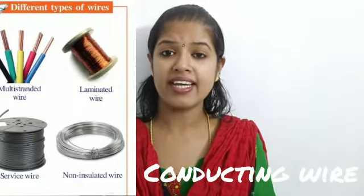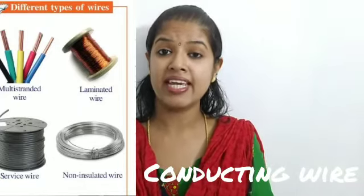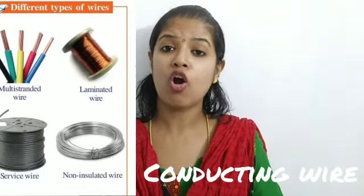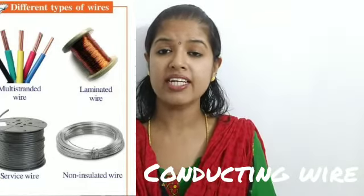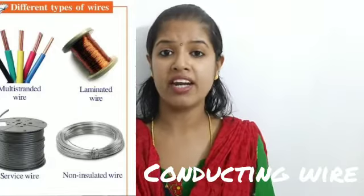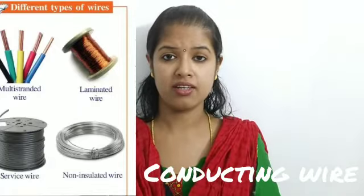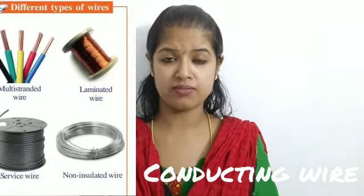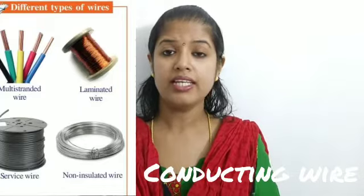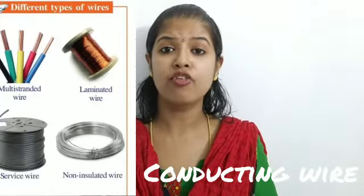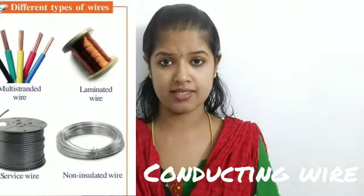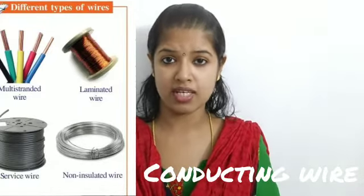The next type is the laminated wire, where the copper wire is laminated with varnish, as you can see from the picture. This is used mainly for winding electric motors.